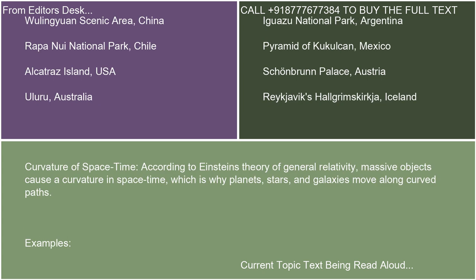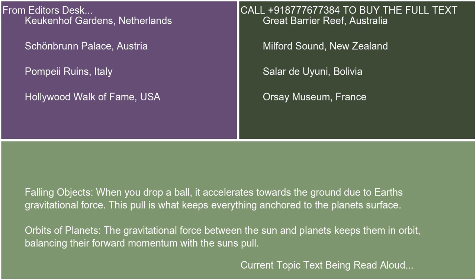Curvature of space-time: according to Einstein's theory of general relativity, massive objects cause a curvature in space-time, which is why planets, stars, and galaxies move along curved paths. Examples. Falling objects: when you drop a ball, it accelerates towards the ground due to Earth's gravitational force. This pull is what keeps everything anchored to the planet's surface. Orbits of planets: the gravitational force between the sun and planets keeps them in orbit, balancing their forward momentum with the sun's pull.